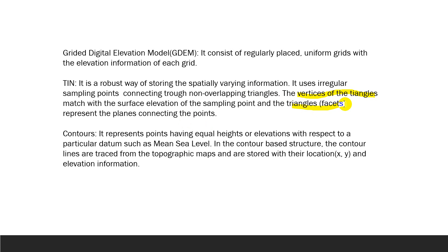The third type is contour, which represents points having equal heights or elevations with respect to a particular datum, such as mean sea level. In the contour-based structure, contour lines are traced from topographic maps and are stored with location X, Y, and elevation information. All points having equal elevation are used to make contour lines.